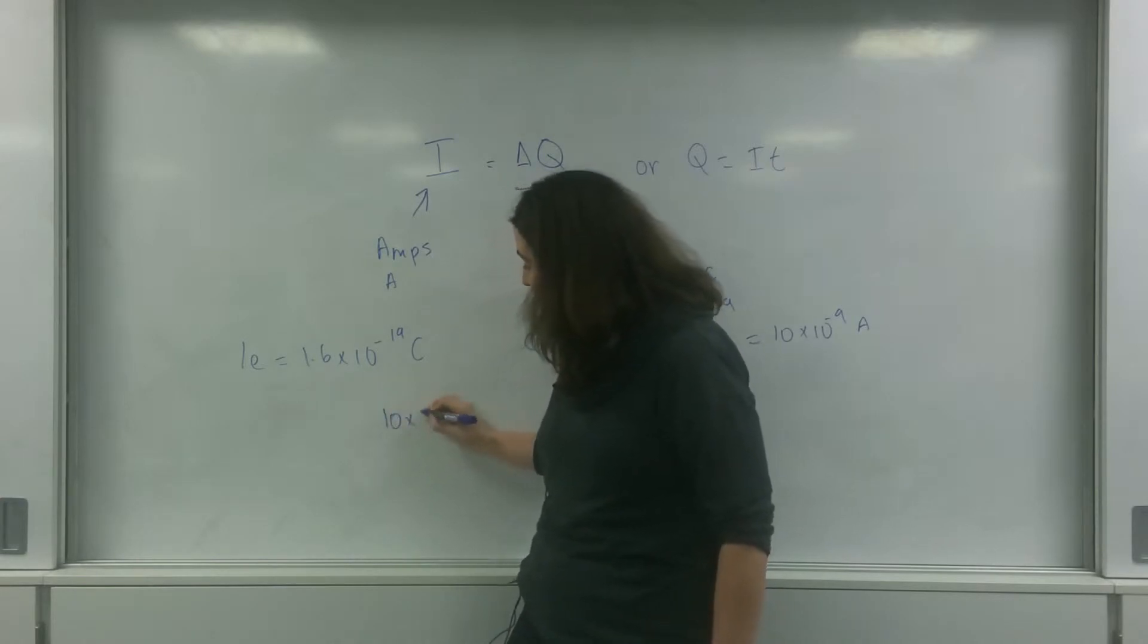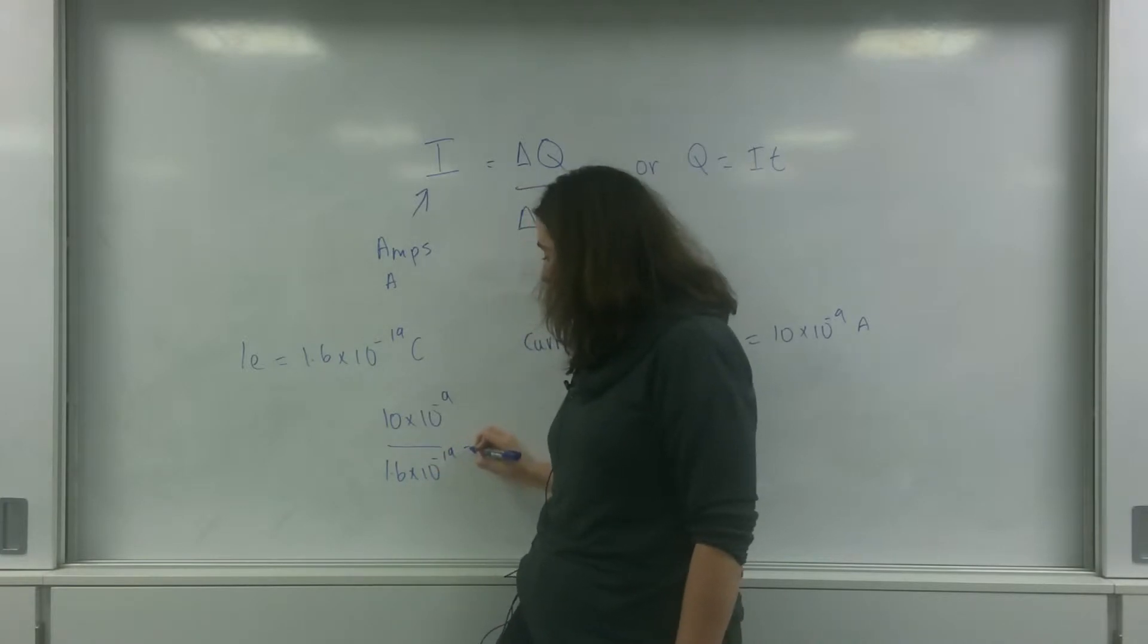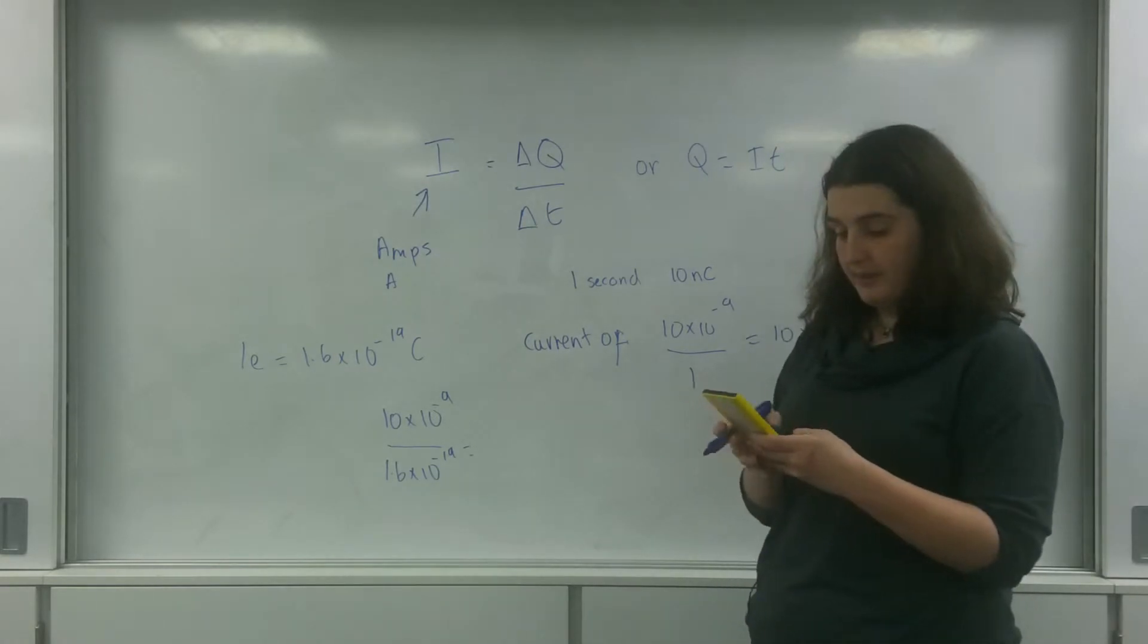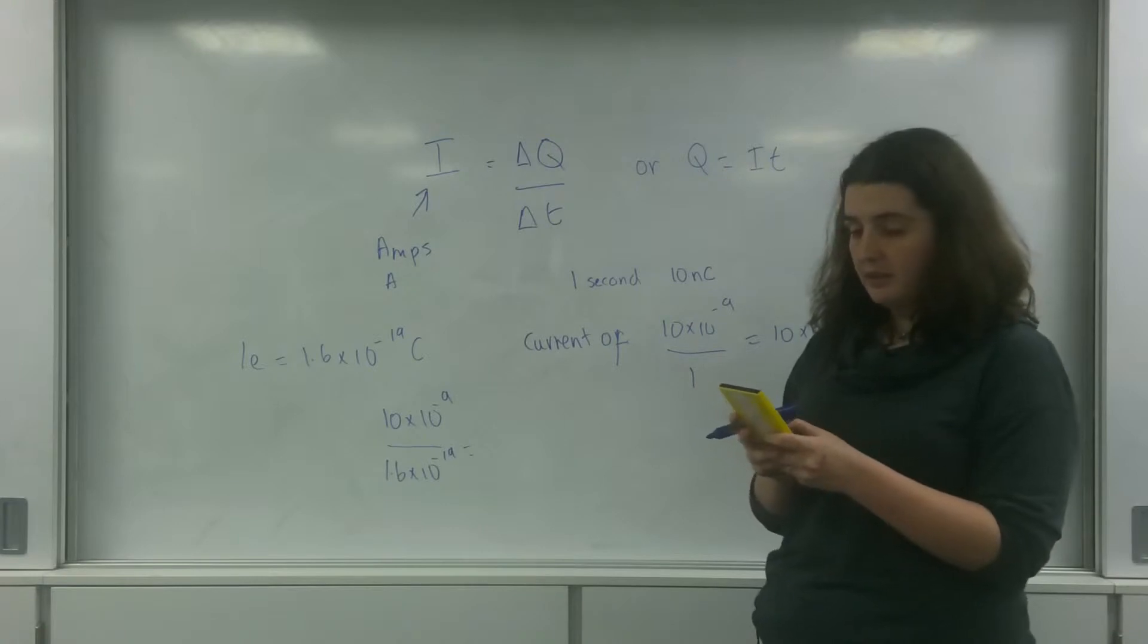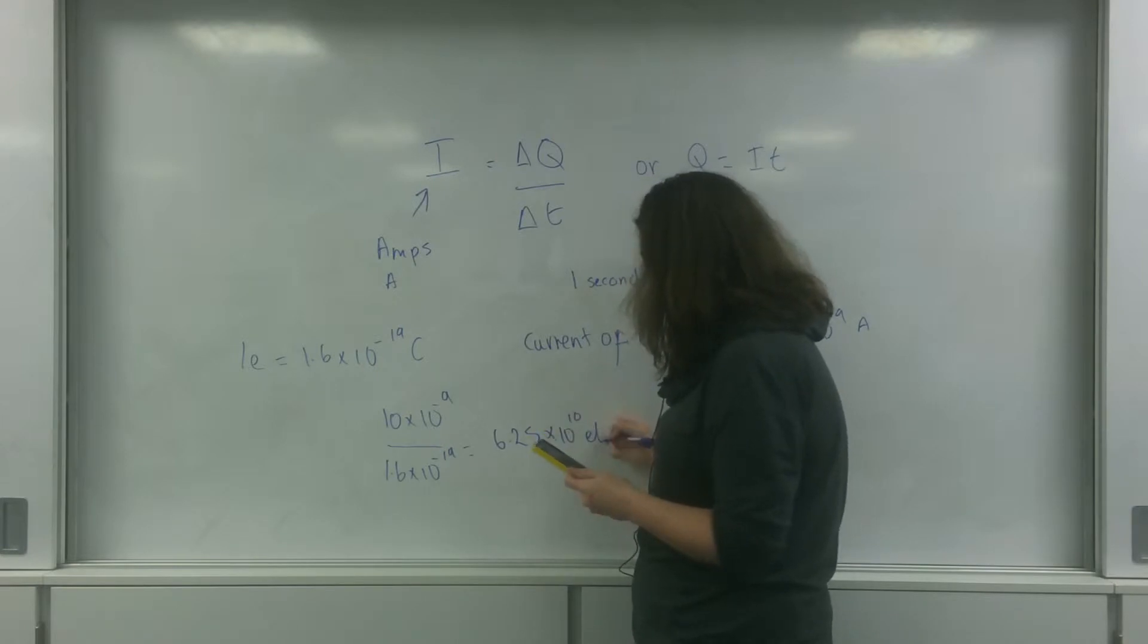So 10 times 10 to the minus 9 divided by 1.6 times 10 to the minus 19 is 6.25 times 10 to the 10 electrons.